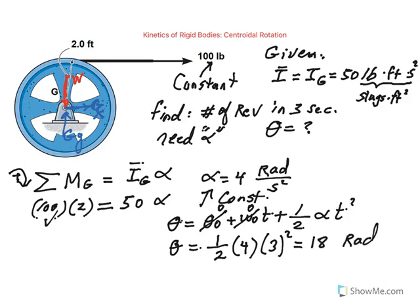And just one quick conversion: 18 radians, 2 pi radians is 1 revolution. So if you divide 18 by 2 pi, you should get a theta of about 2.86 revolutions.